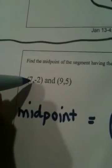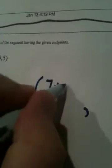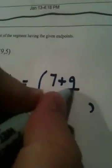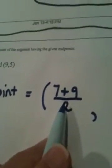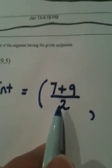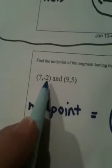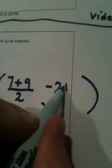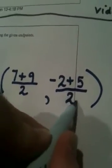This x value is seven and this is nine. Seven plus nine divided by two is how we will get the x coordinate of the midpoint. This y value is negative two and this is positive five. We add them — negative two plus five — and we divide by two.